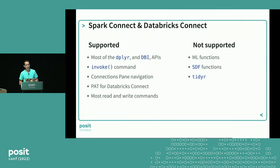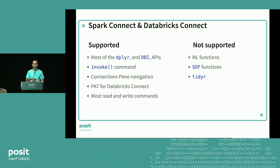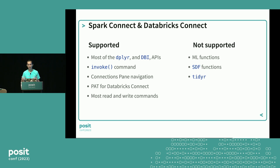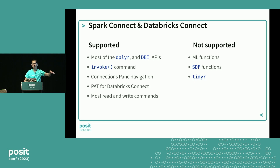There are some limitations with Spark 3.4 and 3.5 in Spark Connect. What we support: dplyr and DBI APIs, the invoke command, the connections pane, personal authorization tokens, OAuth from Workbench, and most read and write commands. What's not yet supported — especially in 3.4 — is ML functions, SDF functions, and tidyR. That said, pivot_longer is now partially available, though not all arguments. If you try existing pivot_longer code, it won't silently ignore unsupported arguments — it'll tell you they're not supported, so it's safe to try.